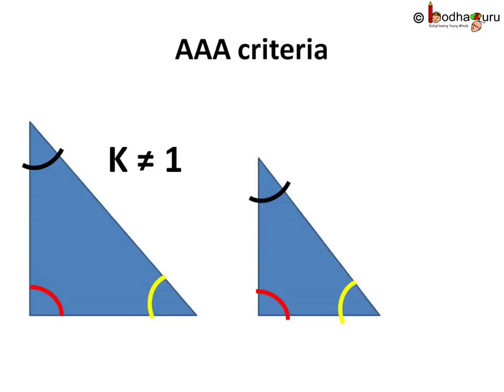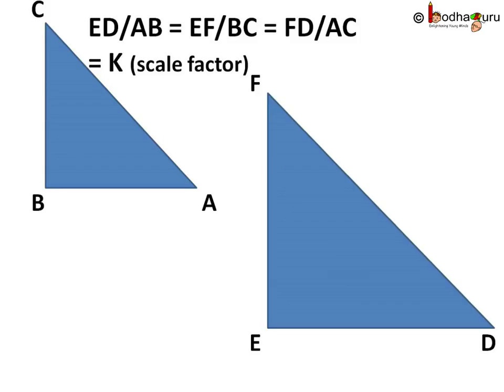After scaling up or down, all the corresponding angles will remain same only if sides are reduced or increased equally. This means growth or reduction is uniform in all aspects, then only the triangles will be similar.